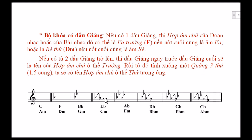Tương tự như thế, trong tác phẩm có ba dấu giáng, thì dấu giáng cuối cùng là la, vậy thì trước la là mi, vậy tác phẩm này là mi giáng trưởng, hoặc đô thứ. Bốn dấu giáng, thì dấu giáng cuối cùng là rê, vậy dấu giáng trước rê là la. Tác phẩm này thuộc giọng la giáng trưởng hoặc pha thứ.